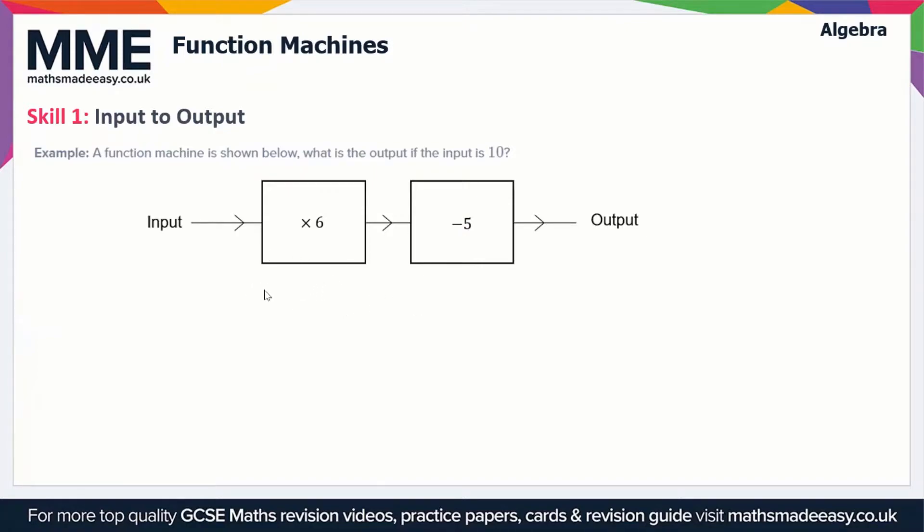First, we'll look at input to output. This is the most basic type of question. In this example, a function machine is shown below. What is the output if the input is 10? The way we solve these questions is we take an input of 10 and perform the operations in the given order.